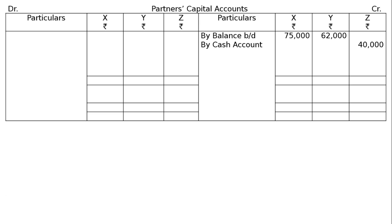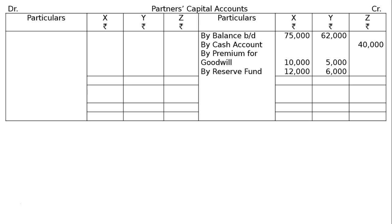By cash — first part, A part: Z brings in Rs 40,000 as his capital and he is given one-fourth share in profit. By cash account, in the column of Z, Rs 40,000. And by premium for goodwill account: Z brings in Rs 15,000 for goodwill, half of which is withdrawn by old partners. Rs 15,000 will be distributed in 2 to 1 sacrificing ratio — that is Rs 10,000 for X and Rs 5,000 for Y. Half of this is withdrawn on the debit side — X's capital account debited, Y's capital account debited to cash.